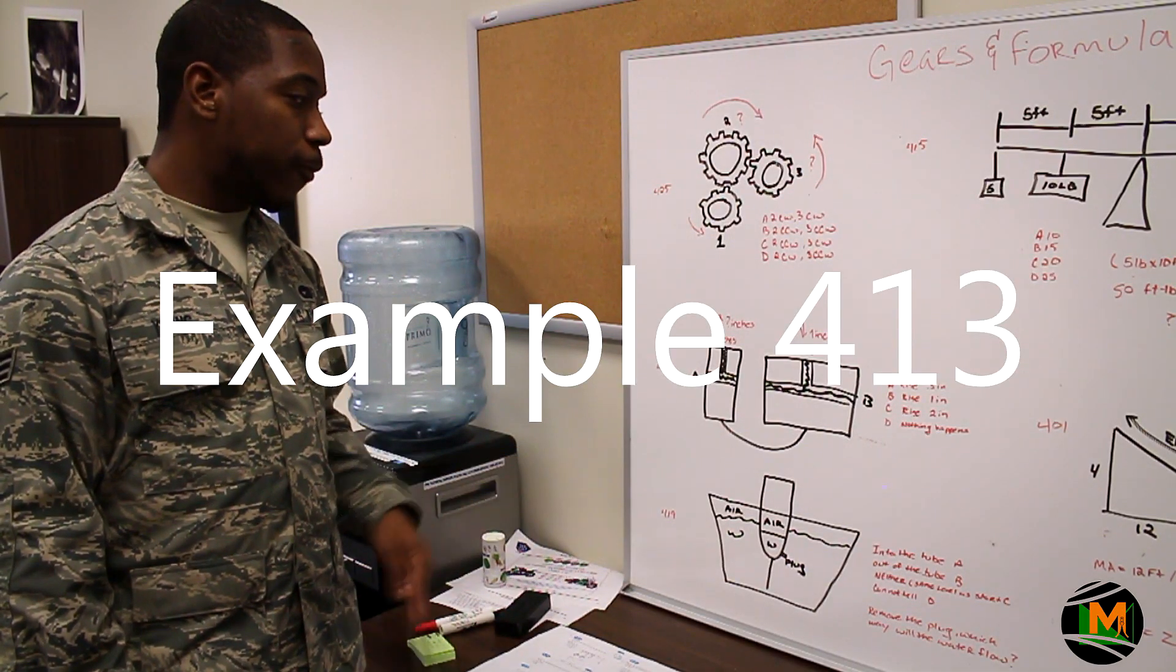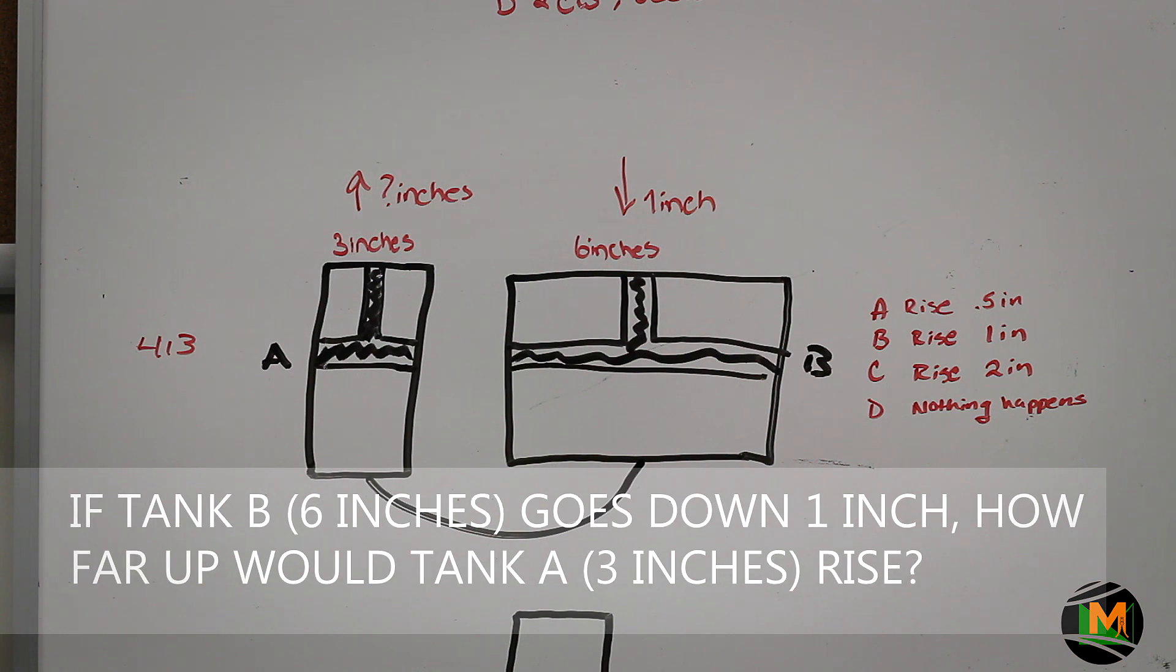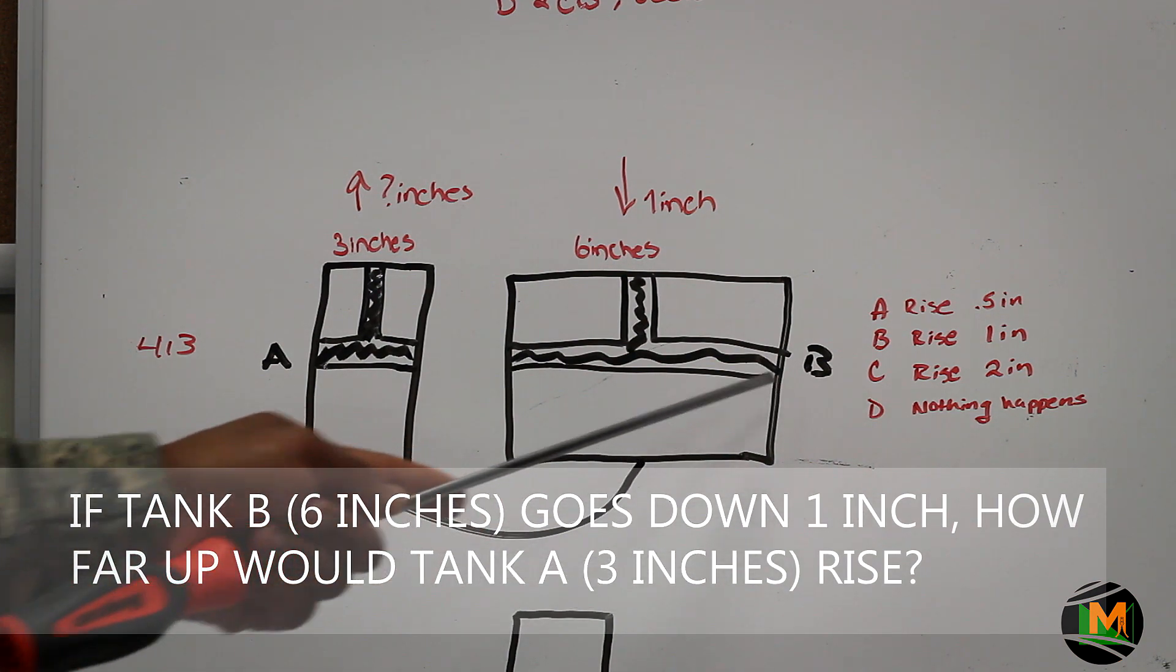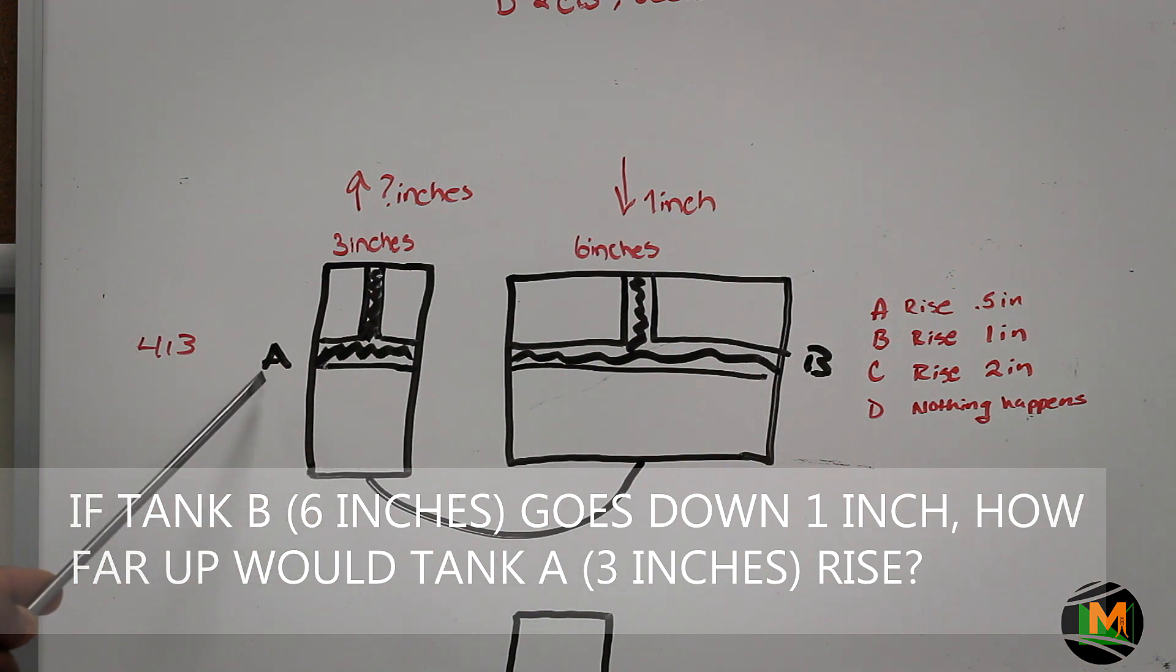The second example is problem number 413. It states, if tank B, which is 6 inches wide, goes down an inch, how far up would tank A go, which is 3 inches wide? This is a very simple problem. However, the answers are designed to confuse.